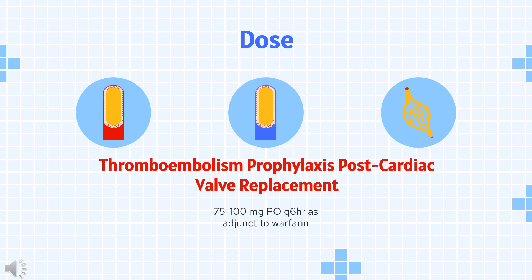Adjunct to thallium myocardial perfusion imaging (off-label): dose adjusted according to body weight. Recommended 0.142 mg per kg per minute for infusion over 4 minutes, not to exceed 60 mg.